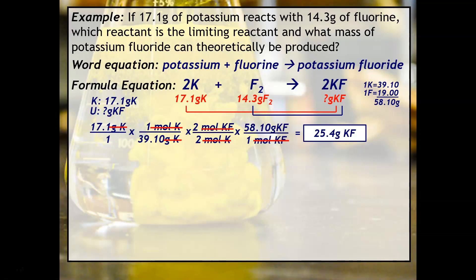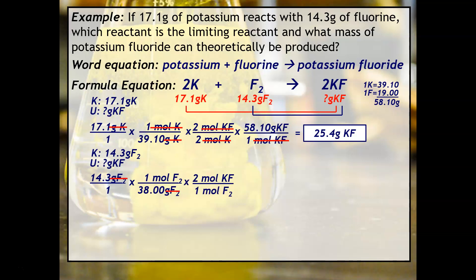For the second calculation, shown in blue, we start with 14.3 grams of fluorine, convert to moles of fluorine using its molar mass, then apply the mole ratio — one mole of fluorine to two moles of potassium fluoride — and finally convert to grams of KF using the same molar mass as before. The last conversion factor is identical in both calculations because we're solving for the same unknown. This calculation gives 43.7 grams of potassium fluoride.